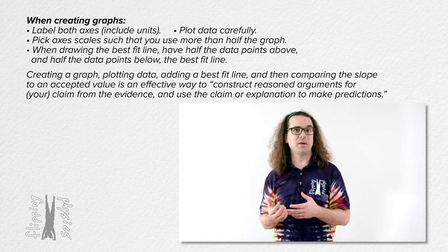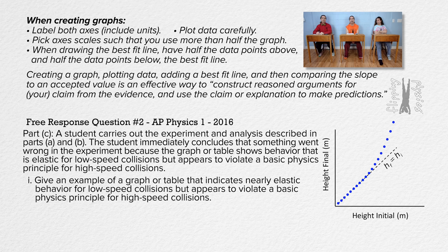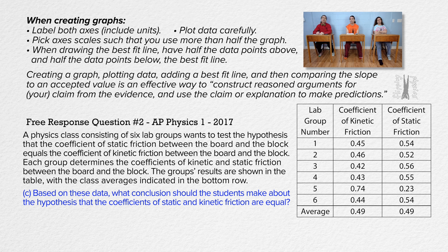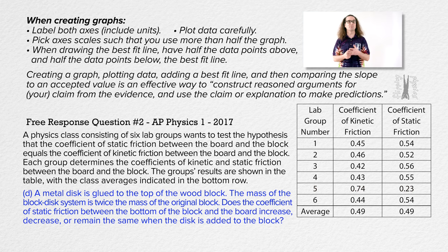You may be asked to estimate how a graph would change based on changes to the data. In part C of the second free response question on the 2016 AP Physics exam, they asked what our data would look like if the experiment appears to violate a law of physics. In the second free response question on the 2017 AP Physics 1 exam, they gave us data and asked us to interpret what happened, expecting us to notice that there was an error in one of the lab group's data. You could also be asked how the data will change if a part of the experiment is changed — for example, how does doubling the mass of an object affect the data or graph?